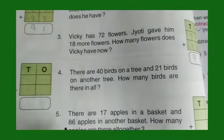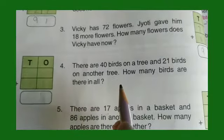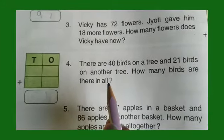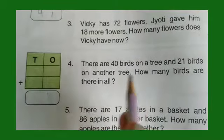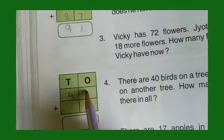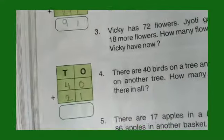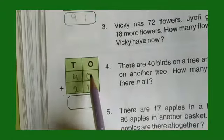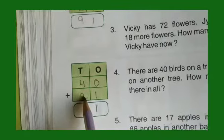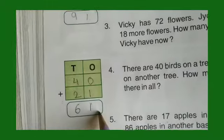Number 4: There are 40 birds on a tree and 21 birds on another tree. How many birds are there in all? In all means both trees combined. So we write 40 and then 21. In the ones house, 0 plus 1 is 1. In the tens house, 4 plus 2 is 6. So there are 61 birds.